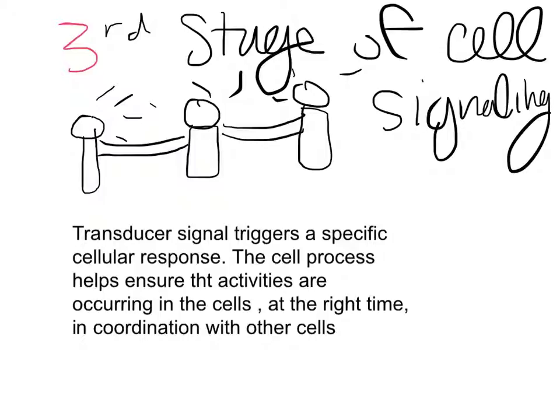Elaborating on what I said before, the cell signaling process helps ensure that crucial activities like these occur in the right cells at the right time and in proper coordination with the other cells of the organism.